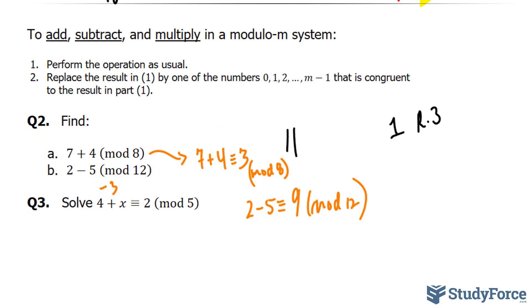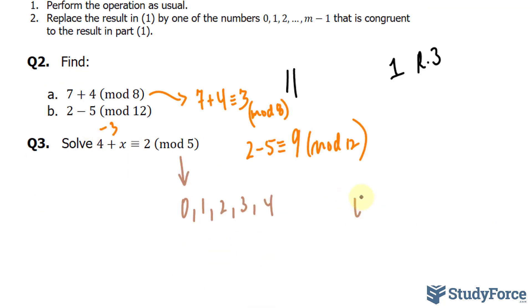Finally, in question 3, we have to solve 4 plus x is congruent with 2. So in the modulus 5 system, we have numbers between 0, 1, 2, 3, and 4. We have to plug in each of these values into this formula to see which one will give us a congruent value.